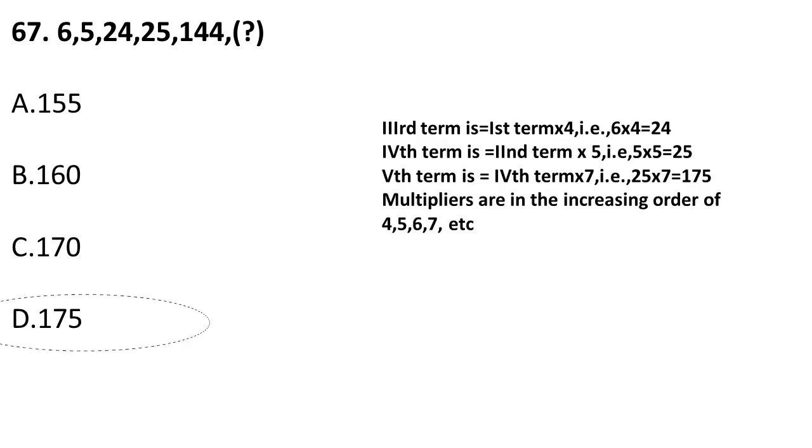Next question: find the next term — 6, 5, 24, 25, 1, 144. The pattern: the third term (24) is 4 times the first term (6). The fourth term (25) is 5 times the second term (5). The sixth term (144) is 6 times the third term (24). So the next term should be 7 times the fourth term: 7 × 25 = 175. The correct answer is 175.